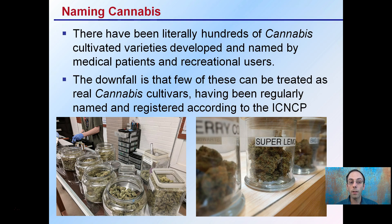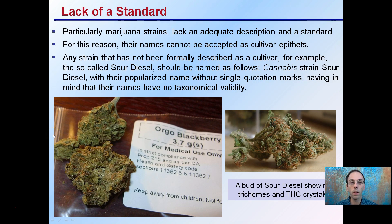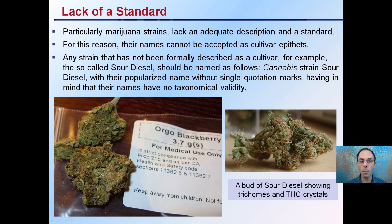The downfall of adopting this system is that few of these have been treated as real cannabis cultivars and have not been formally named and registered through proper channels. Names such as Super Lemon, Big Bud, Green Crack, and Skywalker are just names used by recreational users and really don't have any core botanical meaning. There is a lack of a standard, which is causing a major issue particularly with marijuana strains that lack an adequate formal description — for this reason their names cannot be accepted as cultivar epithets.